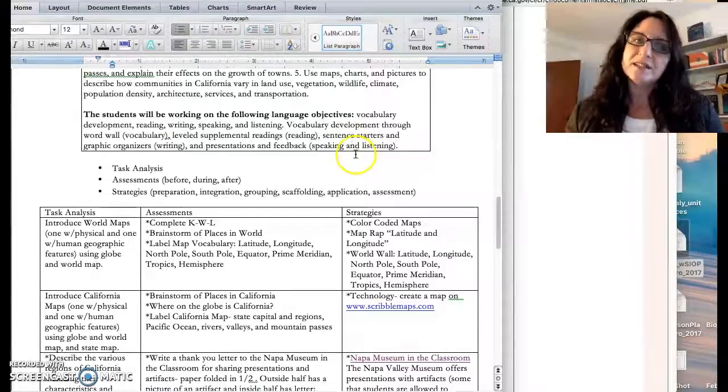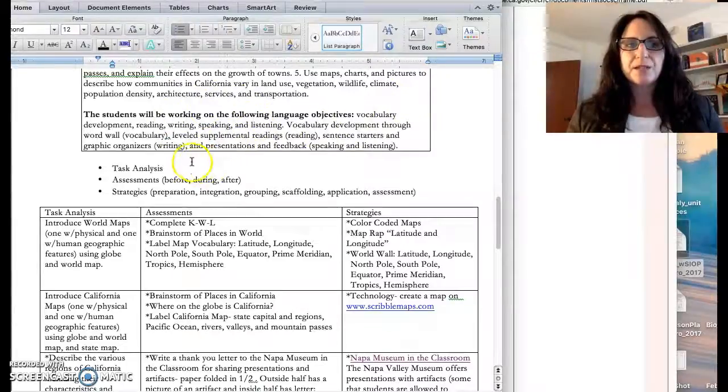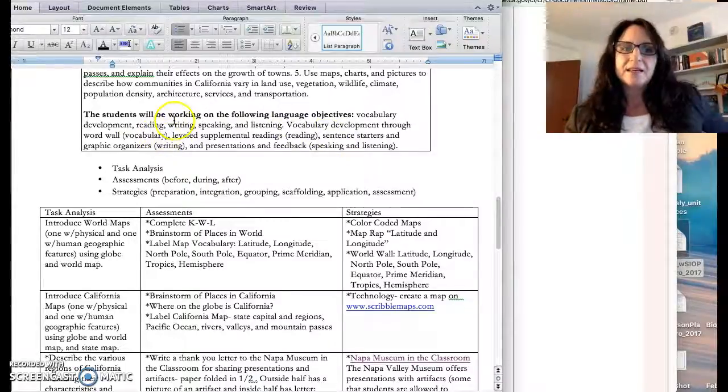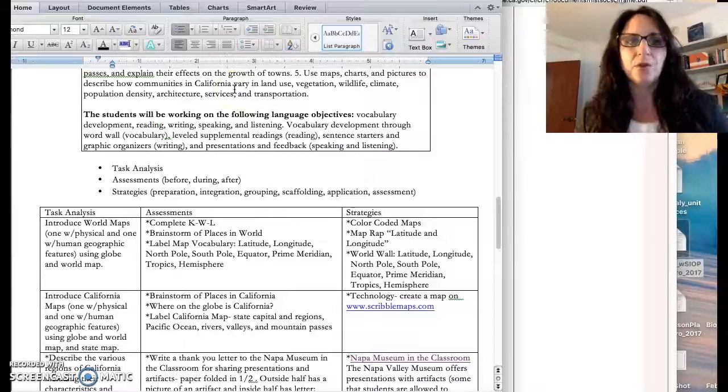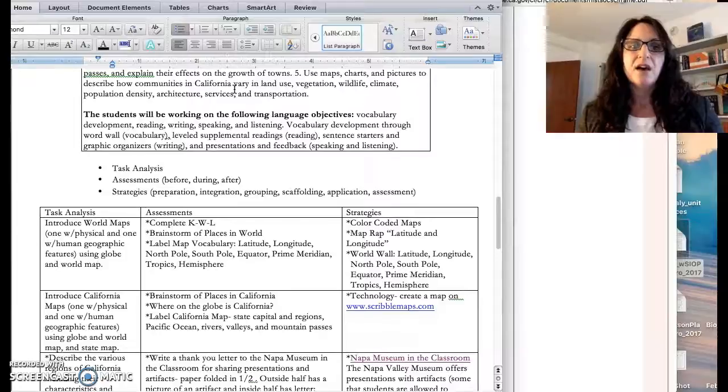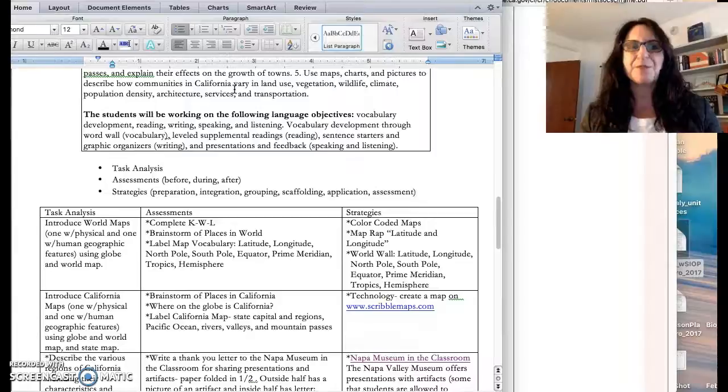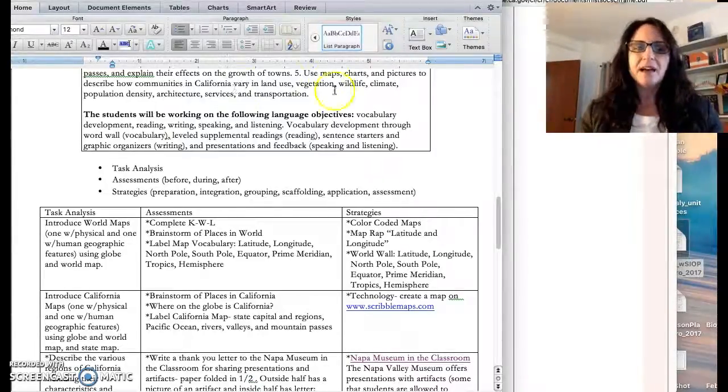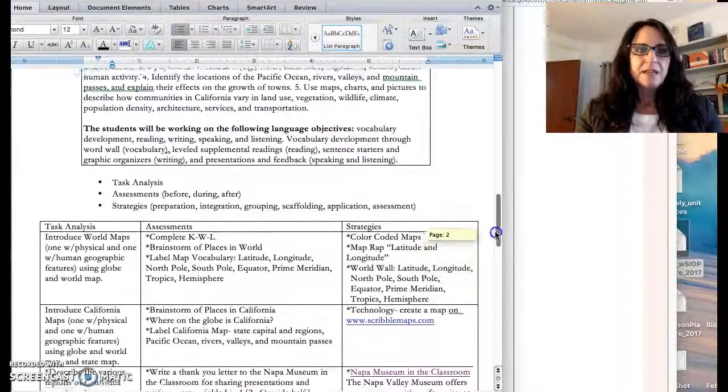They often need additional support around language. Here the students are working on vocabulary development, reading, writing, speaking, and listening. The vocabulary development is being done through a word wall. There's supplemental leveled readings to help them with their reading levels, sentence starters and graphic organizers to help them with writing, and they also do presentations and give feedback. That's where they practice their speaking and listening.